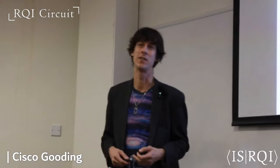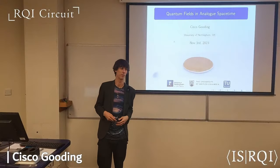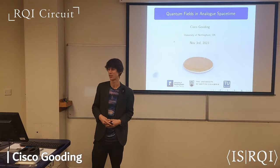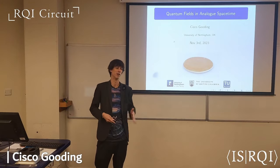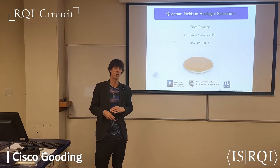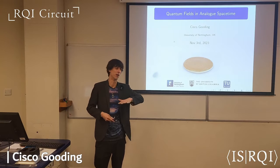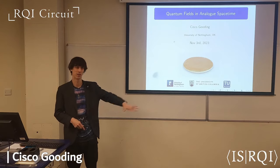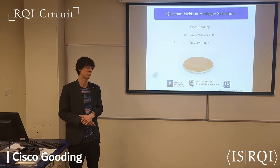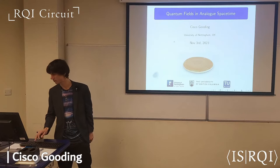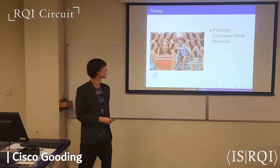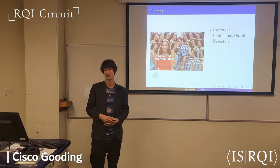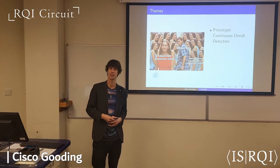These analog spacetime effects can potentially be connected to relativistic quantum information ideas. Our beloved 'pancake' is going to be representative of our favorite scenario where we have a relativistic 2+1 field — either a pancake BEC, a thin film of superfluid, or just a surface.